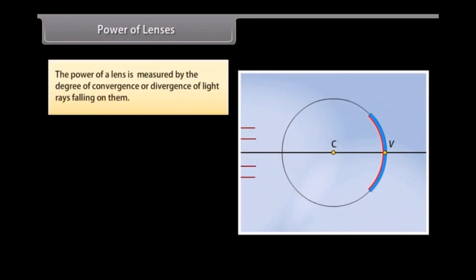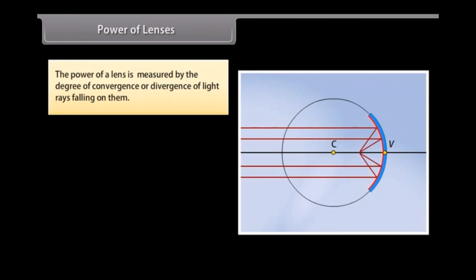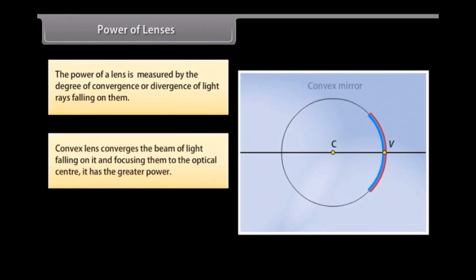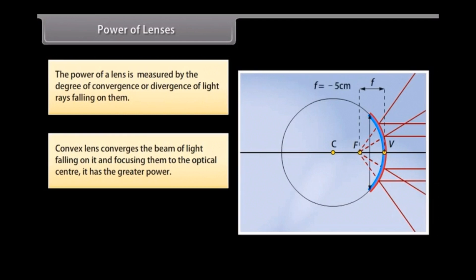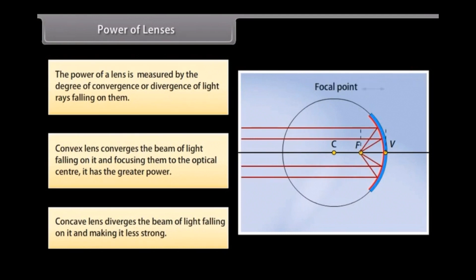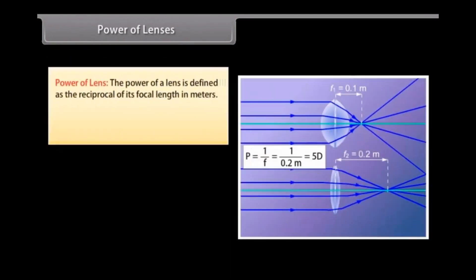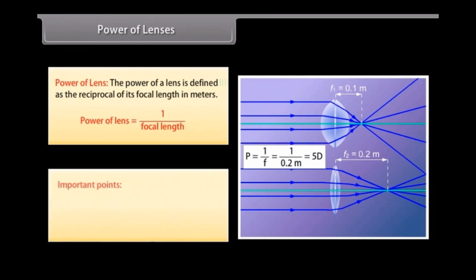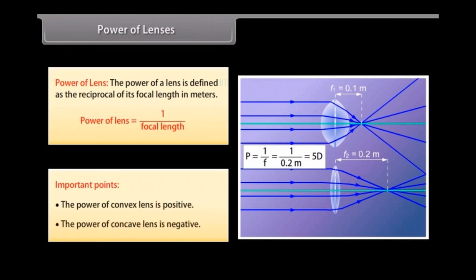The power of a lens is measured by the degree of convergence or divergence of light rays falling on it. A convex lens converges the beam of light, focusing it to the optical center, and has greater power. A concave lens diverges the beam of light. The power of a lens is defined as the reciprocal of its focal length in meters. The power of a convex lens is positive, and the power of a concave lens is negative.